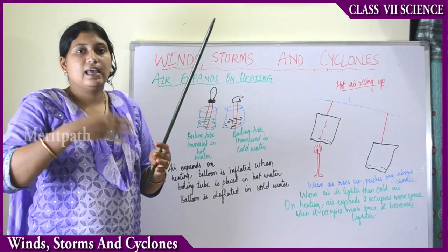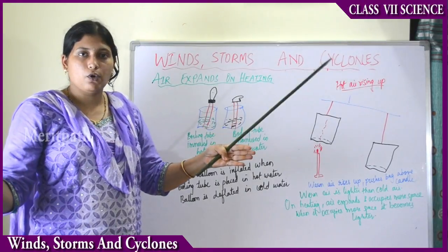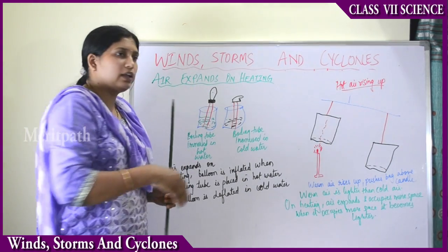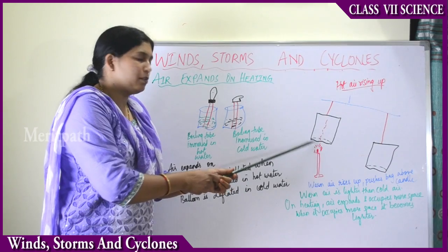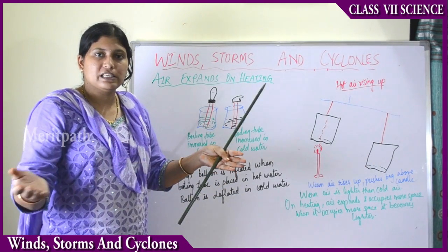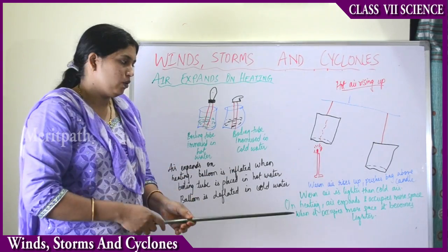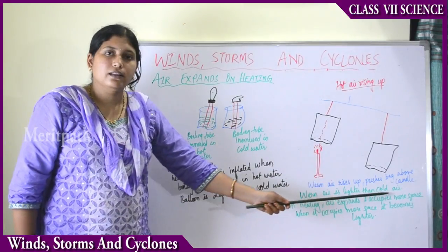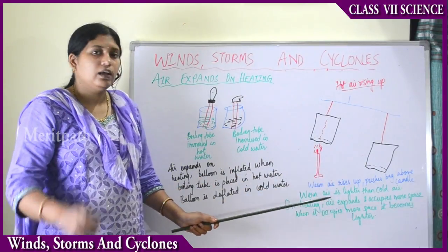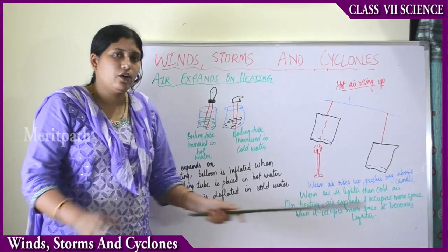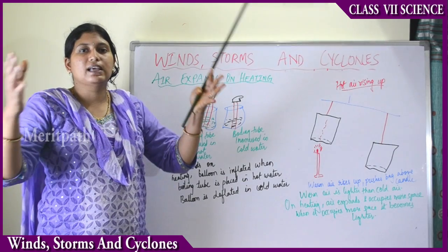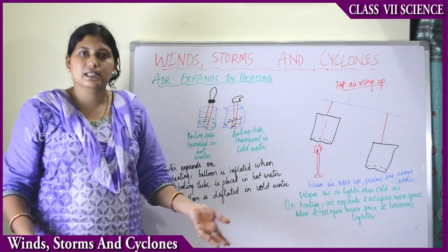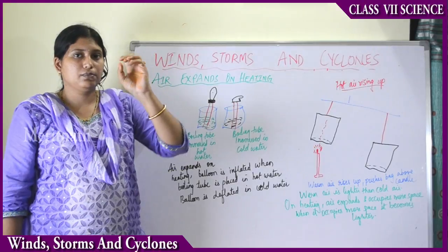When the candle heats the air, the air expands and occupies more space. As the heated air expands, it becomes lighter and rises up, pushing the bag above the candle. Warm air is lighter than cold air. On heating, air always expands and occupies more space, becoming lighter as a result.